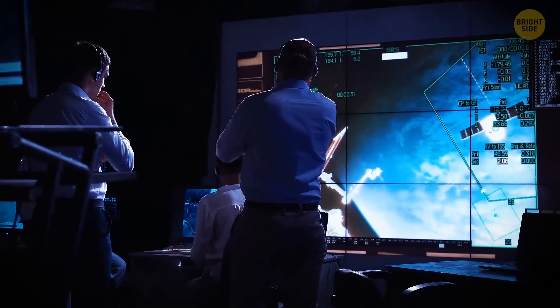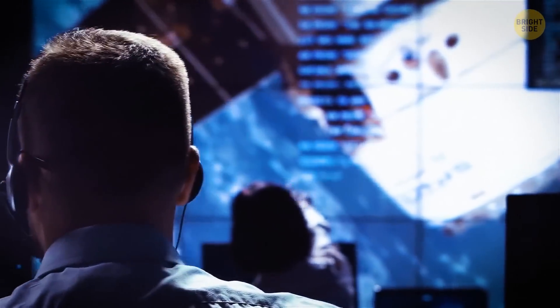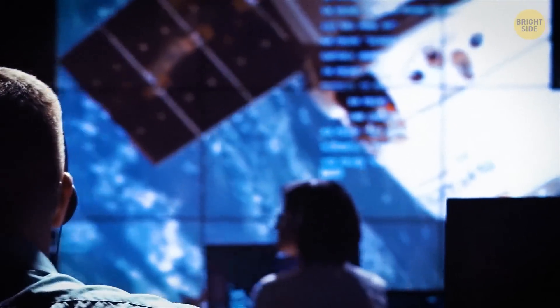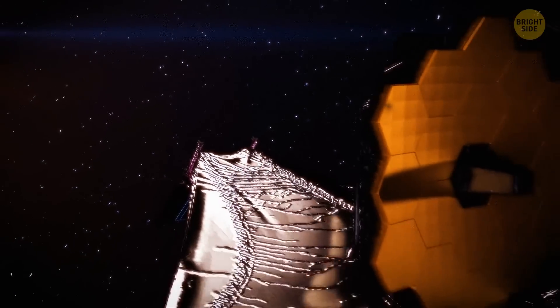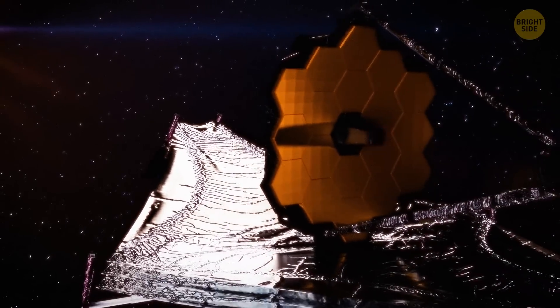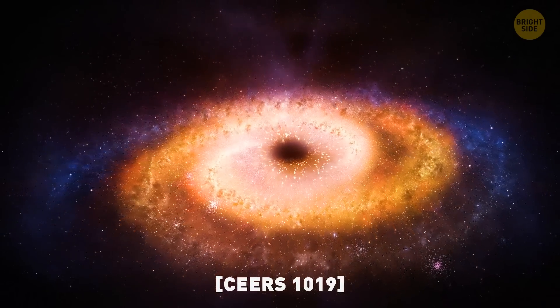Well, to tell you the truth, scientists have long suspected that supermassive black holes could have existed in the early universe. But this theory has been proven only thanks to the JWST and its infrared eye. It has shown that the black hole CEERS 1019 is actively munching on all the matter it can lay its hands on.